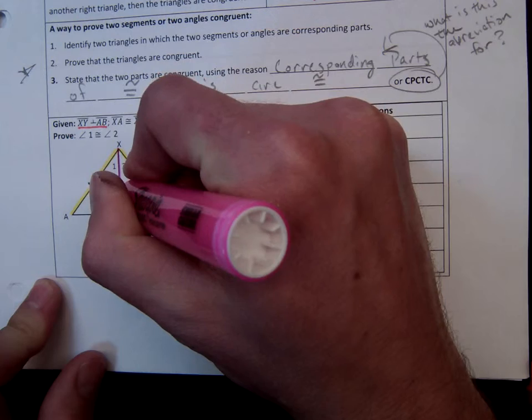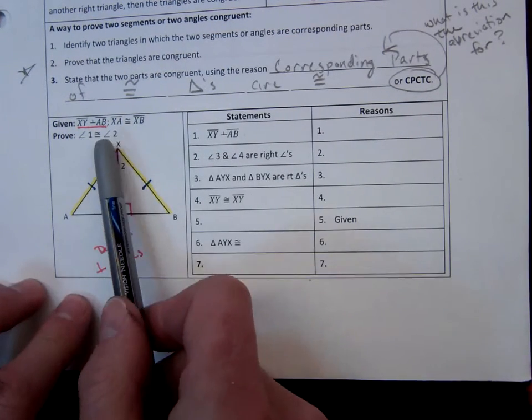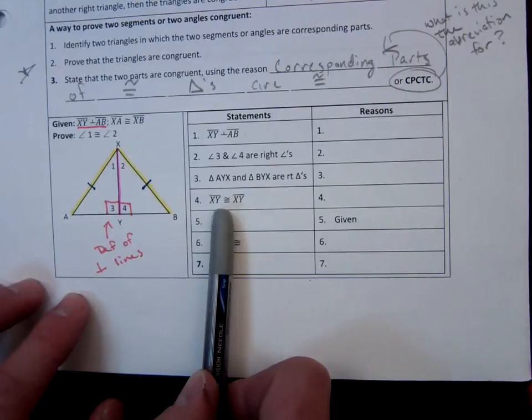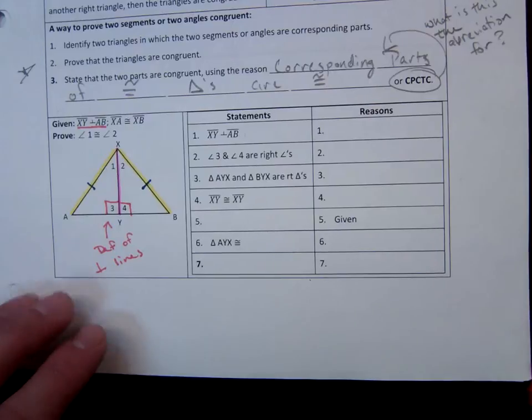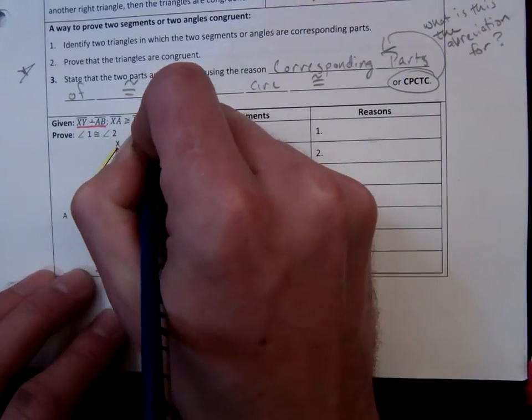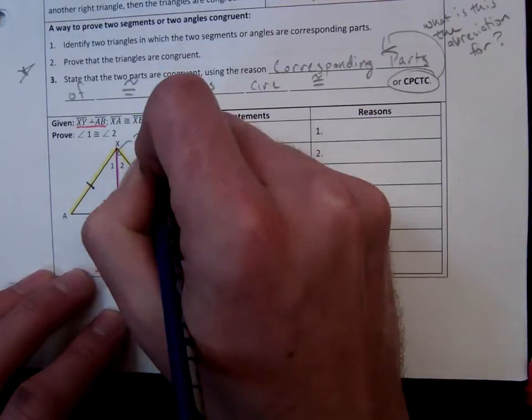This one right in the middle. So, we can say that XY is congruent to XY. And you can see over here that that is a statement that we will be making. And that is because of the reflexive property. And I'm going to give myself a little bit of a hint here or a reminder.